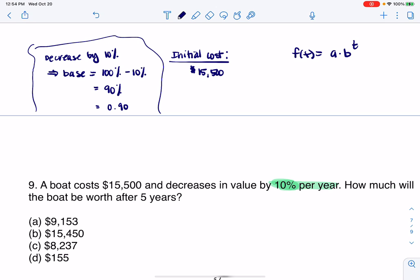If I think about an exponential model, A times B to the T, my A value is $15,500, my base is 0.9, and I'm going to the T. That's my exponential model. I like to use C(t) for cost - I like to make my letters match.